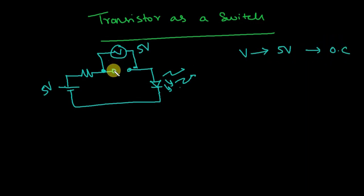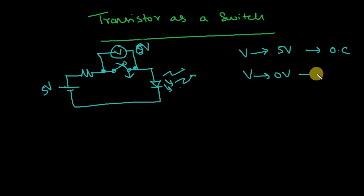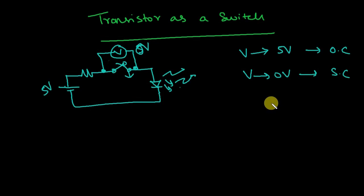If I short the switch — that is, close it — then the two terminals are at the same potential, so the voltage across the switch will be 0. So: if the voltage across the switch is 0, the switch is closed; if the voltage is 5 volts (the applied voltage), it is an open circuit.